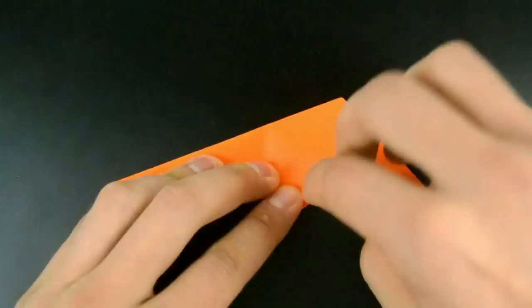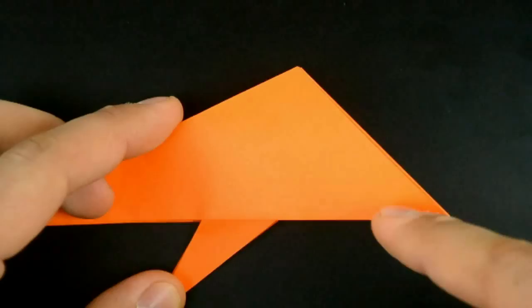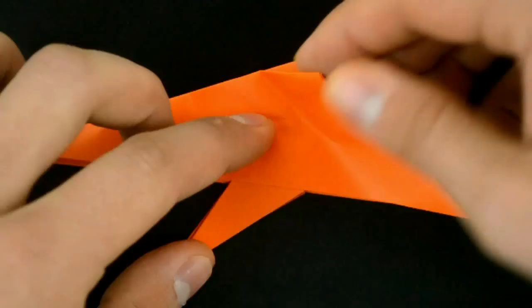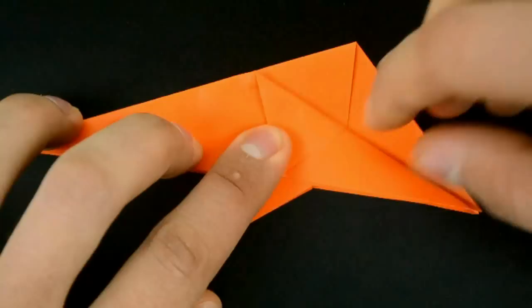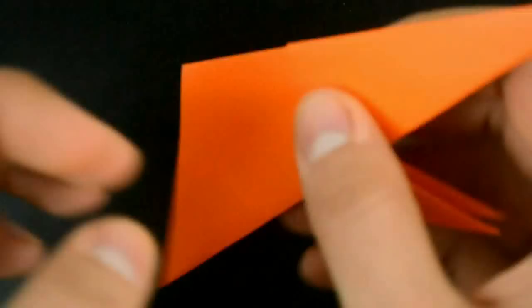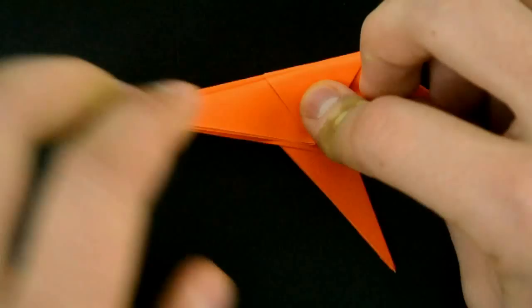All right, now on the first layer let's fold this little diagonal here to this other line, the horizontal one. Turn it over again and repeat on the other side.